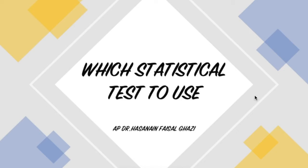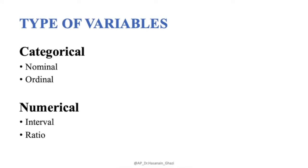Before we decide which statistical test to use, we need to know that the choice depends on the type of variables we have. We have categorical and numerical variables. Categorical includes nominal and ordinal; numerical includes interval and ratio. In simple terms, categorical means there are categories — for example, gender: male and female. Numerical means continuous variables — numbers — such as weight, height, or temperature.